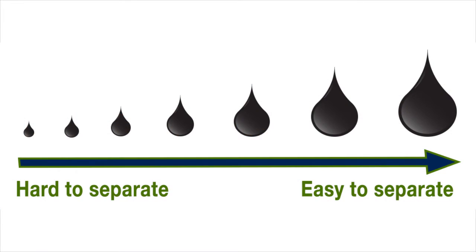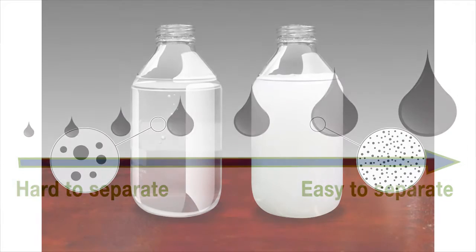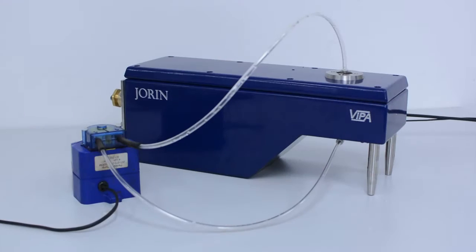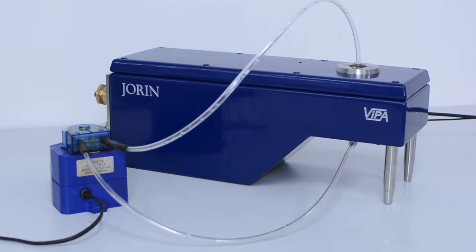Here at Ultraspin we use a video particle size analyzer, and in this video we're going to show you how it works and how it can be used to get an accurate representation of your oily water. With any oily water problem, the most important thing is to measure the oil droplet size directly. All oily water treatment vendors should be able to tell you what your oil droplet size is, and here at Ultraspin we use a video particle size analyzer to get that accurate representation.